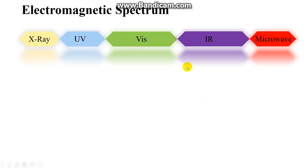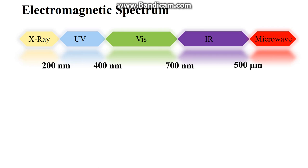The electromagnetic spectrum consists of X-ray, UV, visible, IR, and microwave — as you can see here. X-ray has a lower wavelength compared to microwave. Going from left to right, we are increasing the wavelength and thereby decreasing the energy. In terms of energy, X-ray has much more energy compared to microwaves, which is why X-ray is very harmful — it has more penetrating power and can damage your tissues.